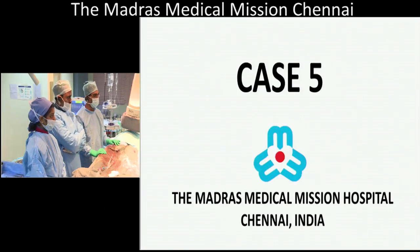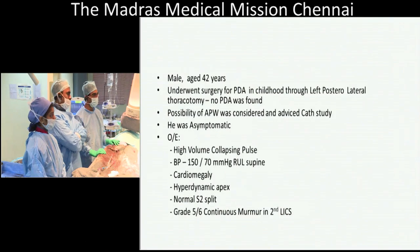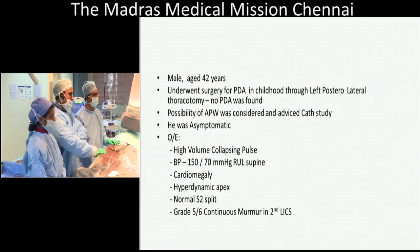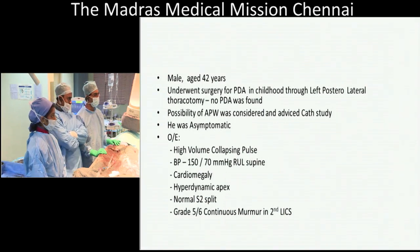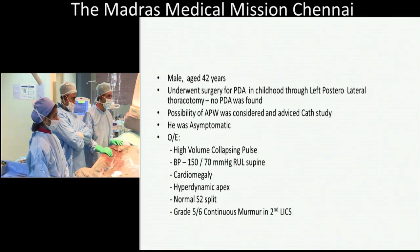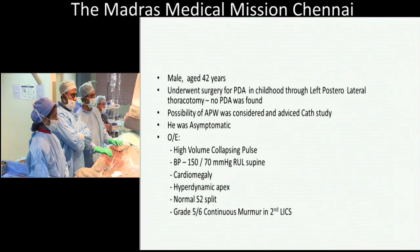Hello, good afternoon to all. Greetings from Triple M Hospital, Chennai, India. Here is a case: an adult male aged 42 years who underwent surgery when he was 10 years old for PDA through left posterolateral thoracotomy. On the surgical note it was mentioned that no PDA was found; possibility of aortopulmonary window was considered and a cath study was advised, which he did not undergo, and he was lost to follow-up. He is asymptomatic.